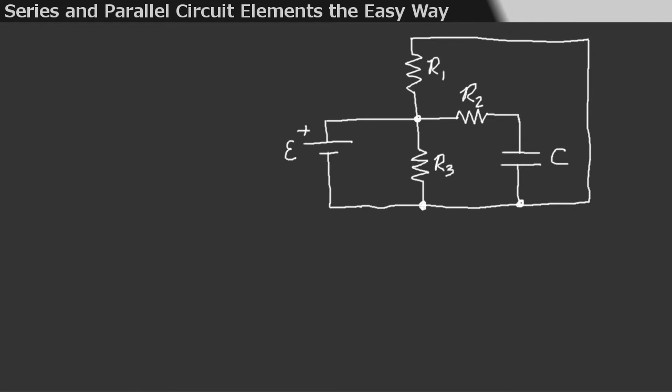Let's see an example. Maybe you can just look at this and see that the EMF, R1, and R3 are in parallel, and R2 is in series with the capacitor. That's great! Romeo, however, looks at this and doesn't know where to start.